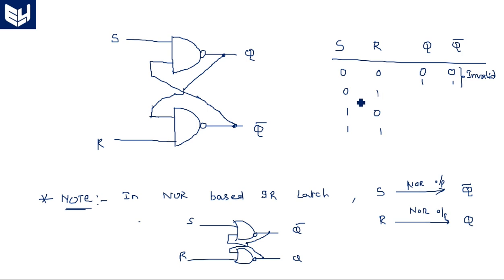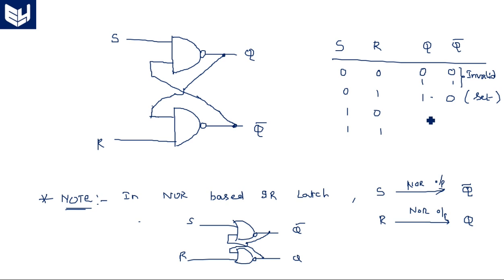When S=0 and R=1, a reset operation is performed in the NOR gate case, but in the NAND circuit everything is in the opposite format, so a set operation is performed here. Therefore Q=1 and Q bar=0 is the set operation. When S=1 and R=0, since R=0, a reset operation is performed, so Q=0 and Q bar=1.